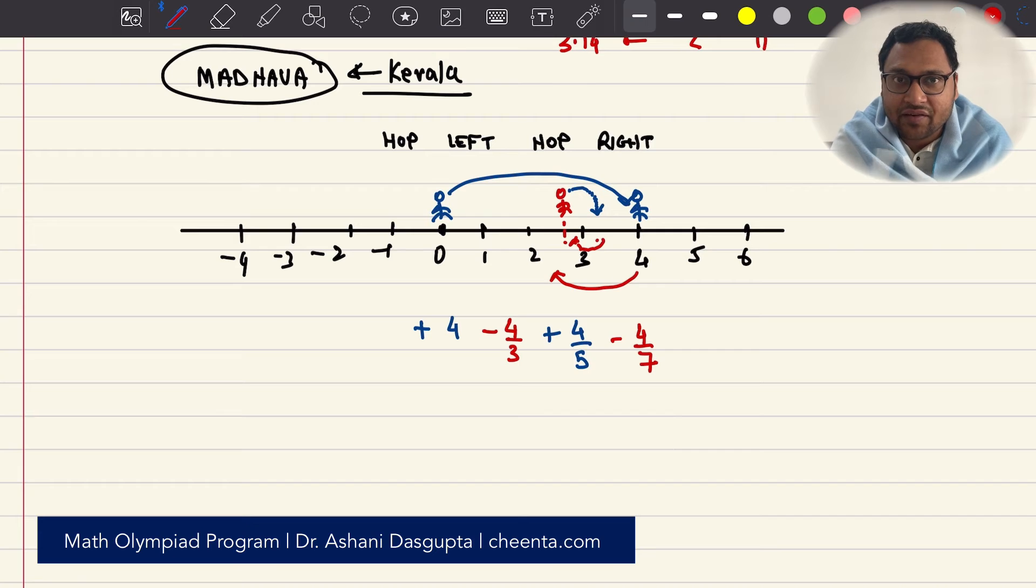He is not making the approximations better. But he is sort of oscillating. Right, left, right, left, like this. And what Madhava said is, that if you do this, if you keep on doing this, of course, you understand what we will do next. It's 4 by 9s. And you know what we will do next. It's 4 by 11s.